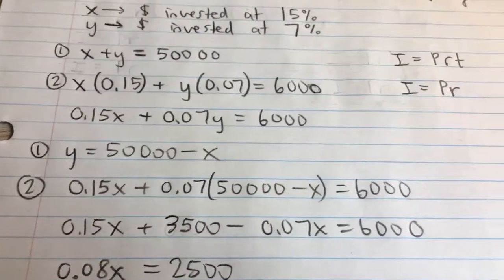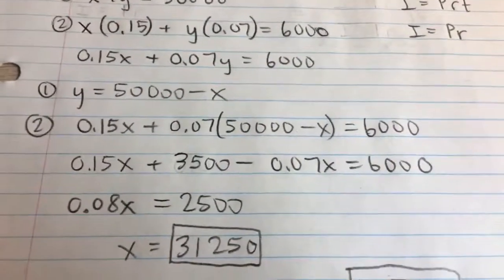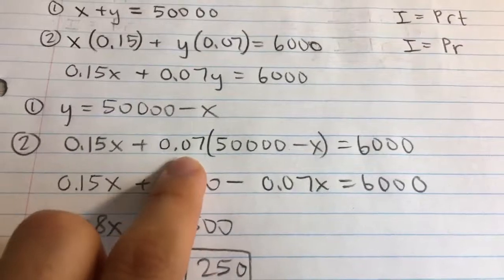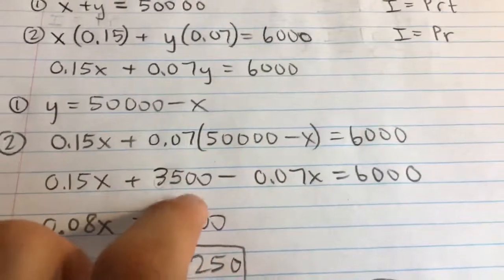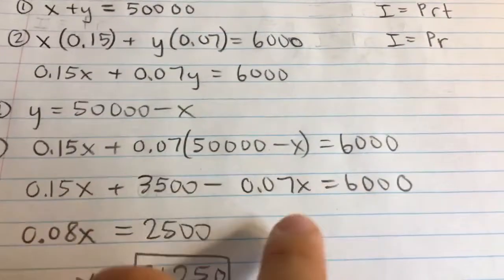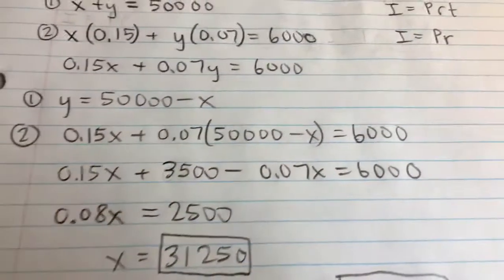I can expand it, move terms around, and solve for X. First, I'll apply 0.07 to both terms: 0.07 times 50,000 gives 3,500, and times negative X gives negative 0.07X.